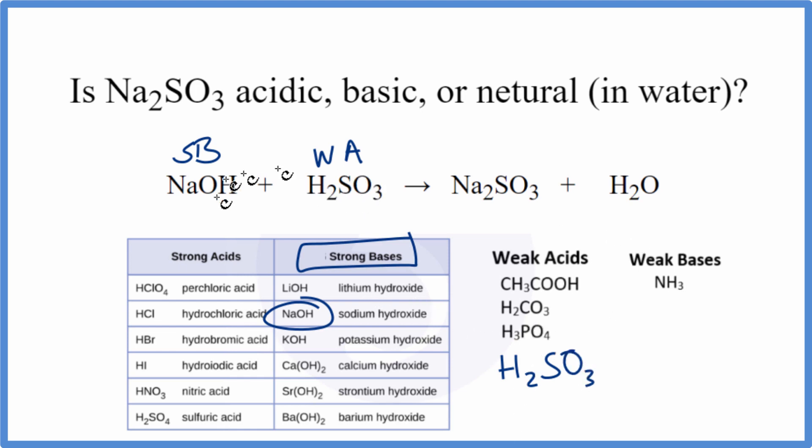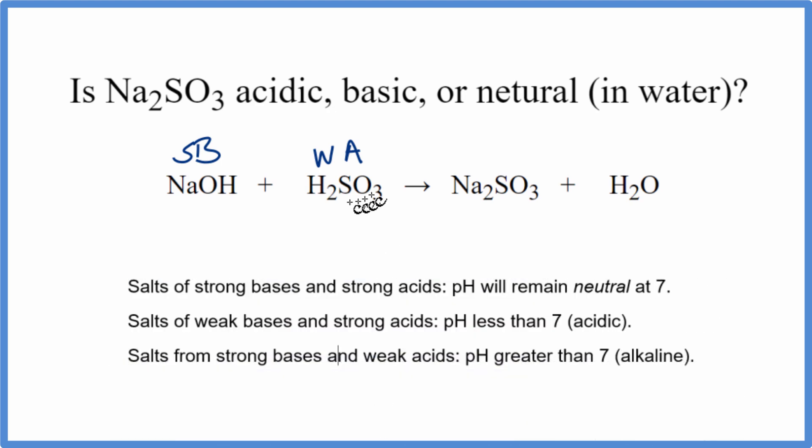So now we know the strength of each of these substances here. We can figure out whether Na2SO3 is going to be acidic, basic, or neutral in water. Looking at our rules, we have a strong base and a weak acid. When these react and neutralize each other to form this salt here,